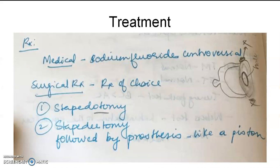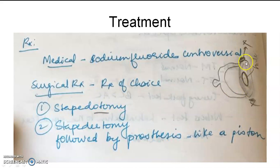Coming to treatment: sodium fluoride treatment is controversial — it has been tried in certain mild cases of otosclerosis. Surgical treatment is actually the treatment of choice. The first procedure is stapedotomy, wherein a hole is created in the footplate of the stapes so that piston-like movement is permitted; the sclerosed tissue is excised and a hole is created. The next option is stapedectomy — removal of the entire sclerosed stapes followed by insertion of a prosthetic piston.